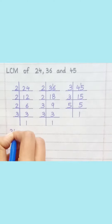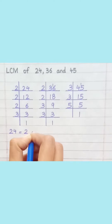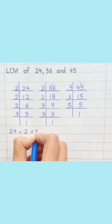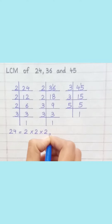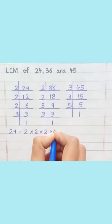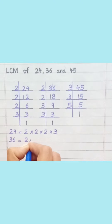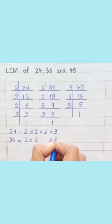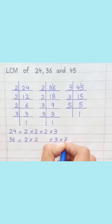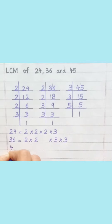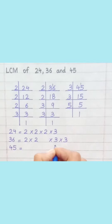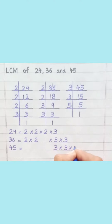24 = 2 × 2 × 2 × 3. 36 = 2 × 2 × 3 × 3. 45 = 3 × 3 × 5.